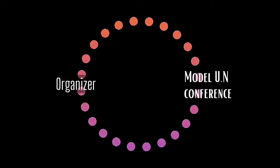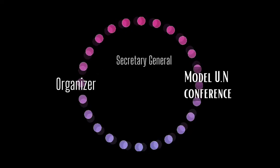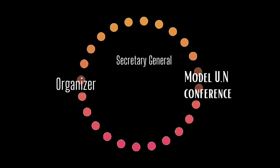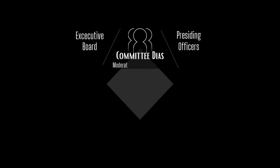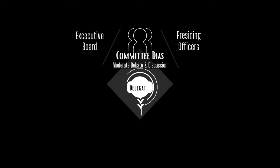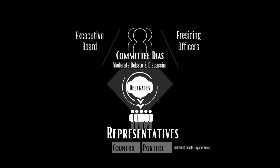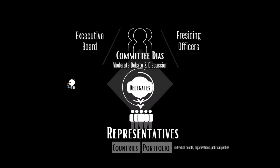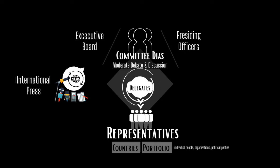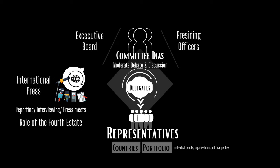A Model UN conference is organized by an organization and is headed by a secretariat. This secretariat is headed by a secretary general who oversees all the operations of a conference. Each conference has multiple committees as discussed previously. Each committee is moderated by a committee dais, also referred to as the executive board or the presiding officers. These moderators moderate debate and discussion among delegates who represent countries in UN or international organization simulations, or in the case of national parliament or regional political organization committees, represent portfolios who can be individual people, organizations, or political parties. Each committee also has an international press team tasked to report on the happenings in the committee, interview delegates on their stands, and conduct press meets.